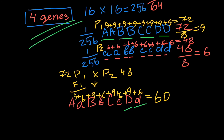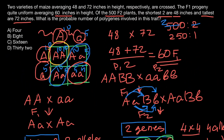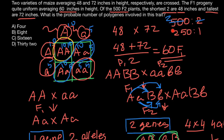Some of you may notice that we expected 1/256 but observed 1/250 — this is just an approximation, and a slight deviation is normal. So our answer is correct. The correct answer is A — 4 polygenes. That's all for today. Thank you for your attention. Please subscribe for my new videos posted almost every day, and see you in the next video. Goodbye.